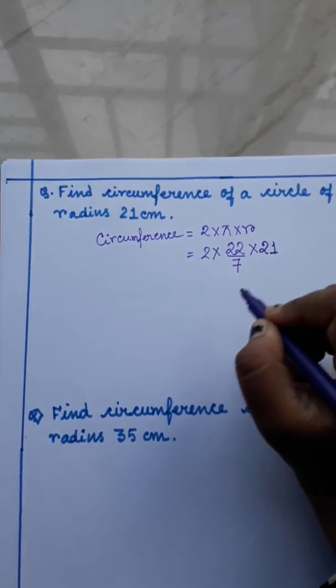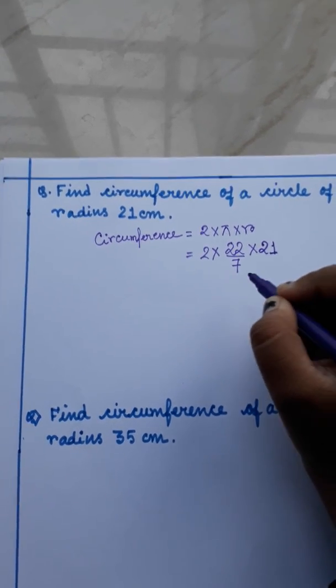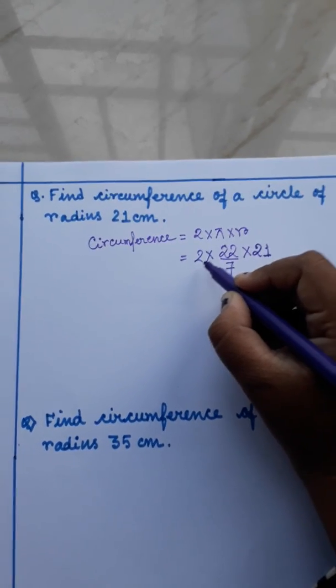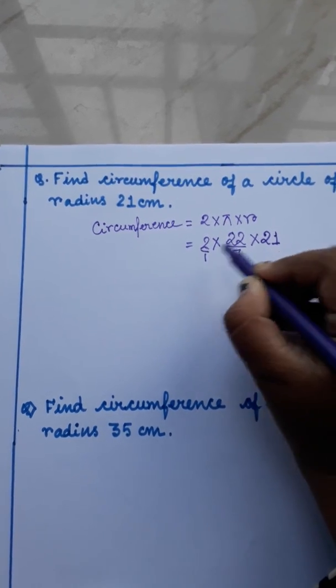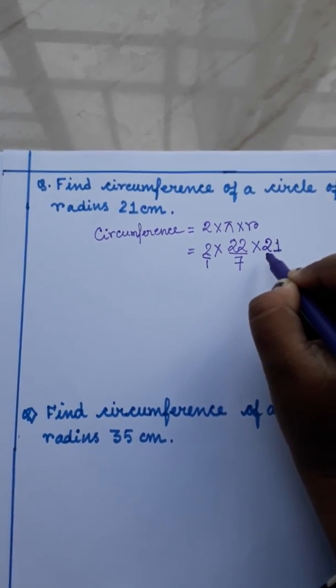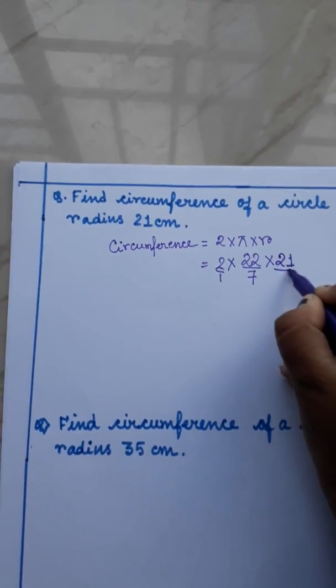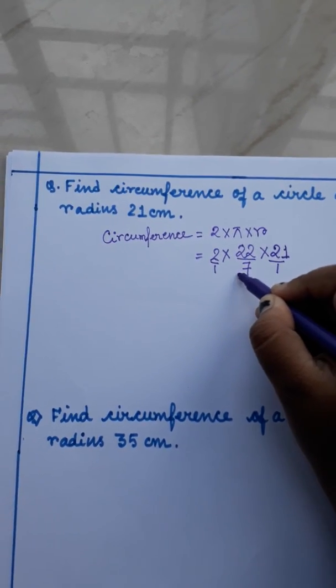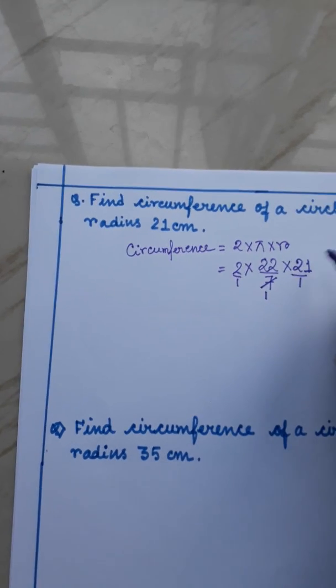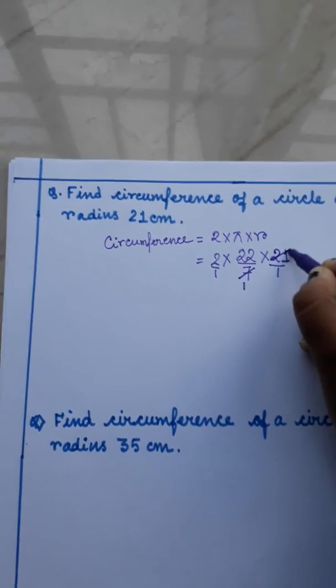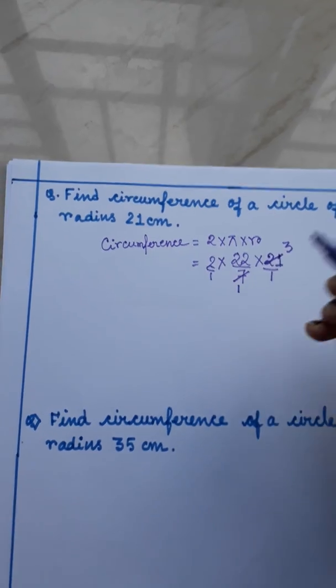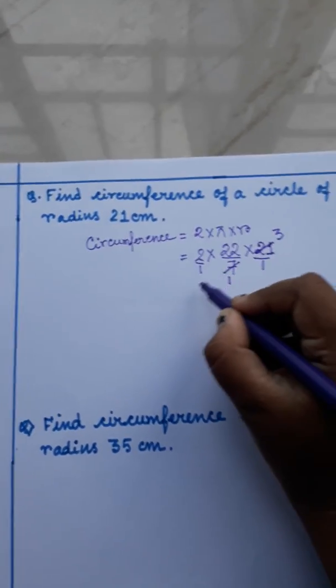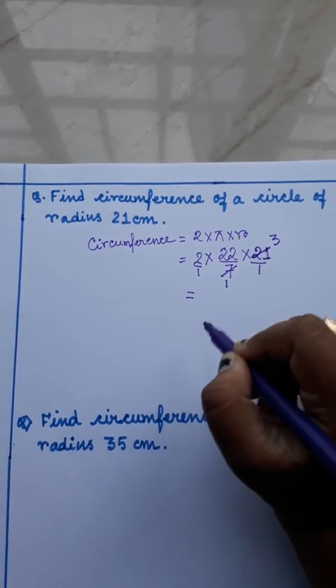Now, again we will do criss-cross multiplication. But before that we will see there is nothing below 2. That means there is 1. And there is nothing below 21. That means there is 1. As for the criss-cross multiplication, we will cut 7 and 21. 7 times 1 is 7, 7 times 3 is 21. So here we will write 3.